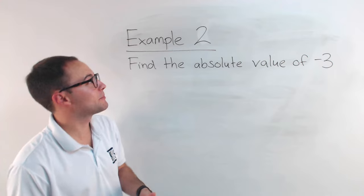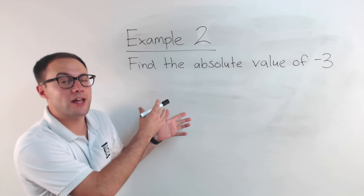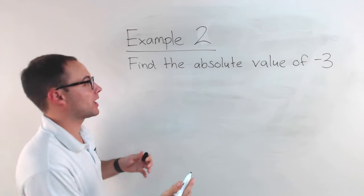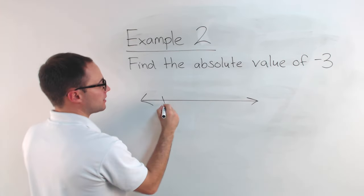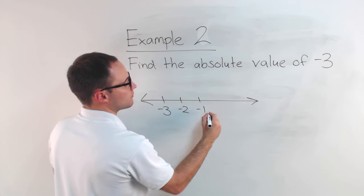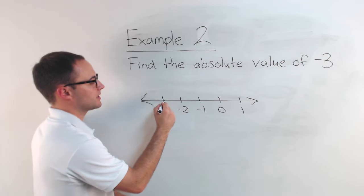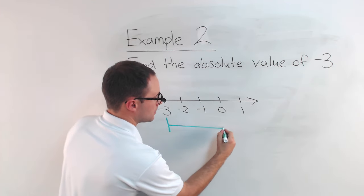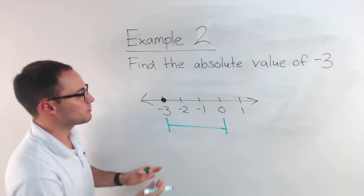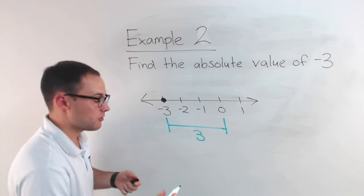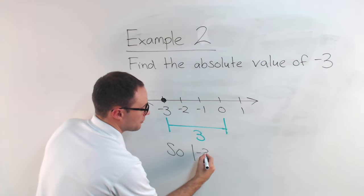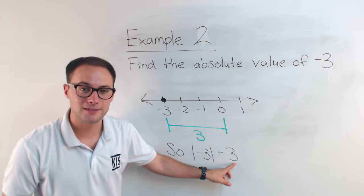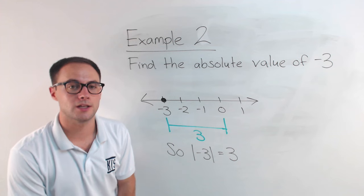Here's another example. Find the absolute value of negative 3. If you want to try this on your own first, go ahead and pause the video. Absolute value — how far away is negative 3 from 0 on a number line? Let's draw a number line: negative 3, negative 2, negative 1, 0, 1. How far away is negative 3 from 0? That distance is 3. So the absolute value of negative 3 is 3. Again, notice it's positive — distance is always going to be positive.